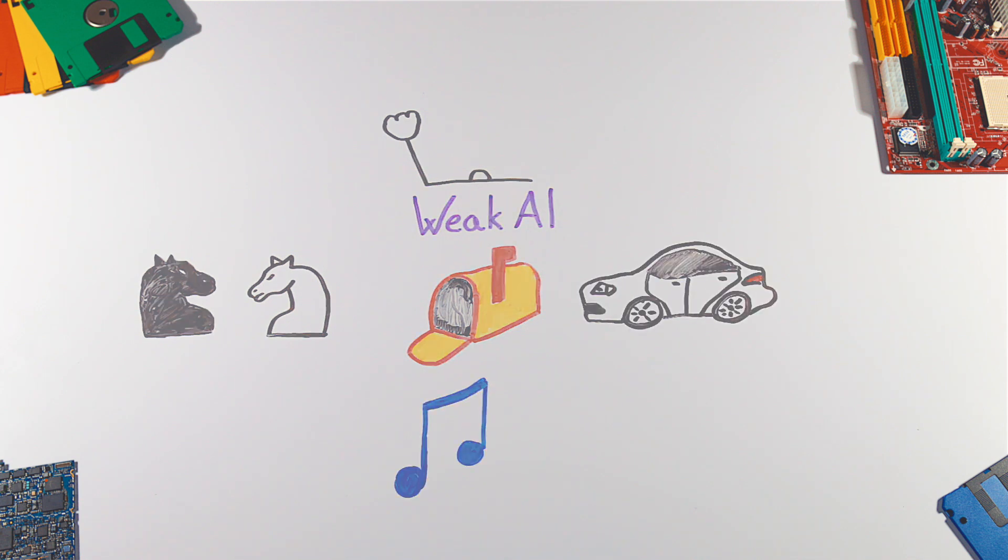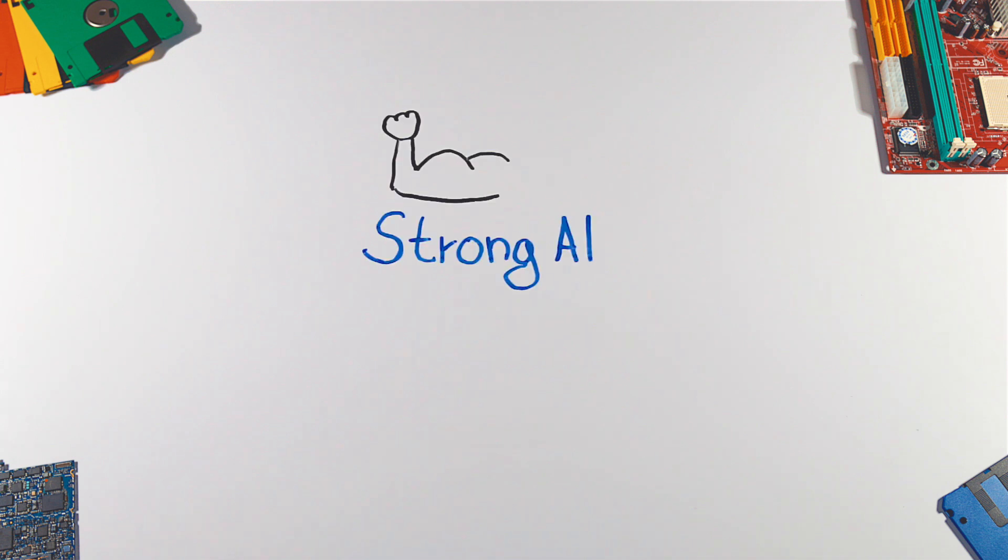The next stage is strong AI, also called general AI. Strong AI refers to intelligence of computers which could perform any intellectual task that a human being can. Basically, it would be as smart as we are.